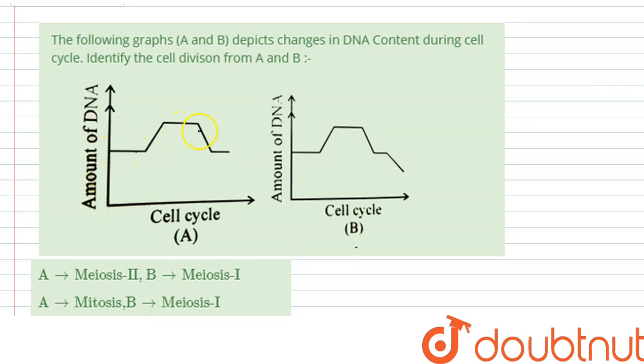Whereas in graph B the amount of DNA increased to some amount, it decreased to the same amount but then decreased again to some amount. Hence we can say that if the amount of DNA was 2n, it became 4n here and it again became 2n.